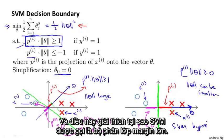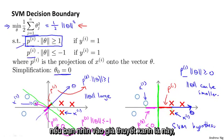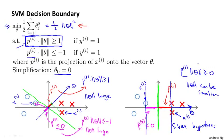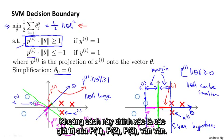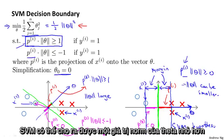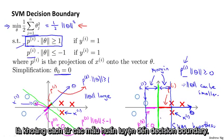So by choosing the better decision boundary, the SVM can make the norm of theta much smaller — and therefore the squared norm of theta smaller — which is why the SVM chooses this hypothesis. This is how the SVM gives rise to large margin classification. The SVM wants the projections of positive and negative examples onto theta to be large, and the only way for that to hold true is if there is a large margin — a large gap — separating the positive and negative examples. The magnitude of this margin is exactly the values p1, p2, p3, and so on.